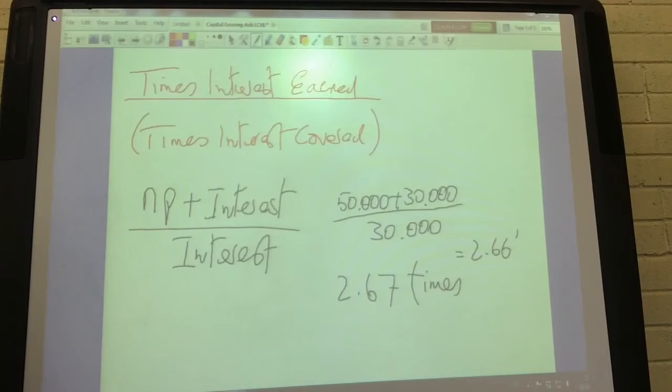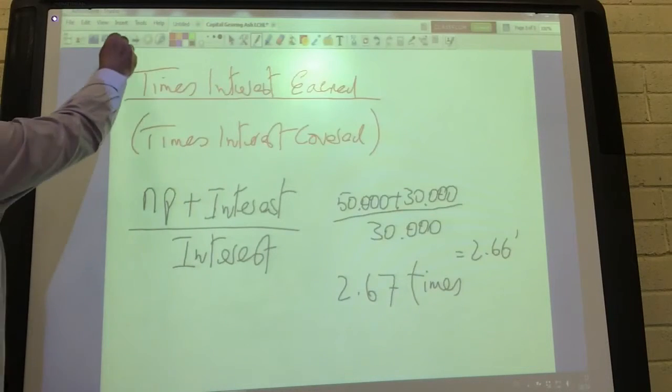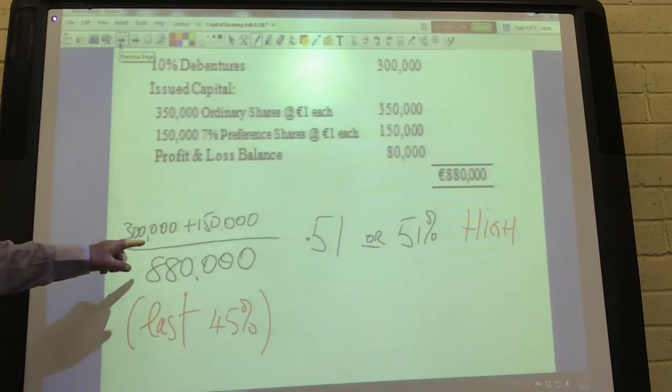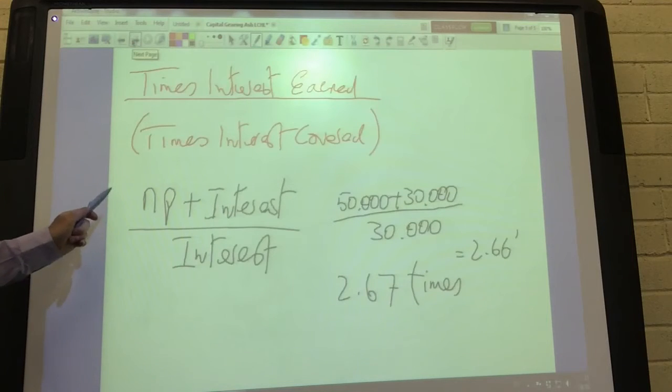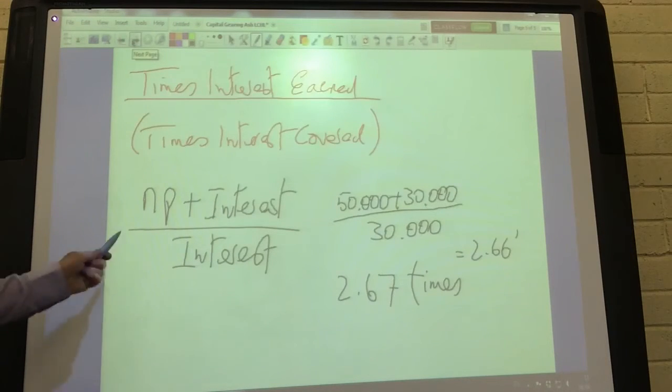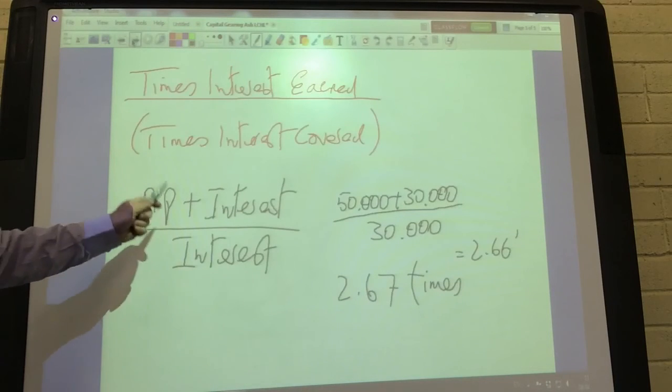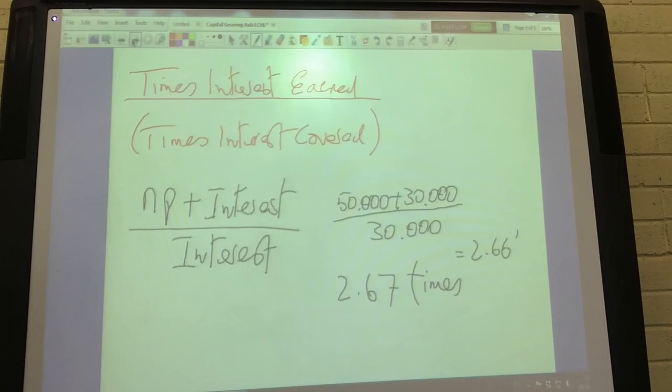Finally, you'll notice that although the gearing ratio includes the calculation of the preference shares because they're fixed return, preference dividend isn't included in the times interest earned formula. Because when it comes down to it, preference dividend need not be paid. It's an appropriation of profits whereas interest has to be charged. So we include interest in this formula and not the preference dividends.